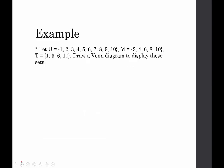Let's draw a Venn diagram to display these sets. We have our universe U, which is defined as {1, 2, 3, 4, 5, 6, 7, 8, 9, 10}. We have set M.